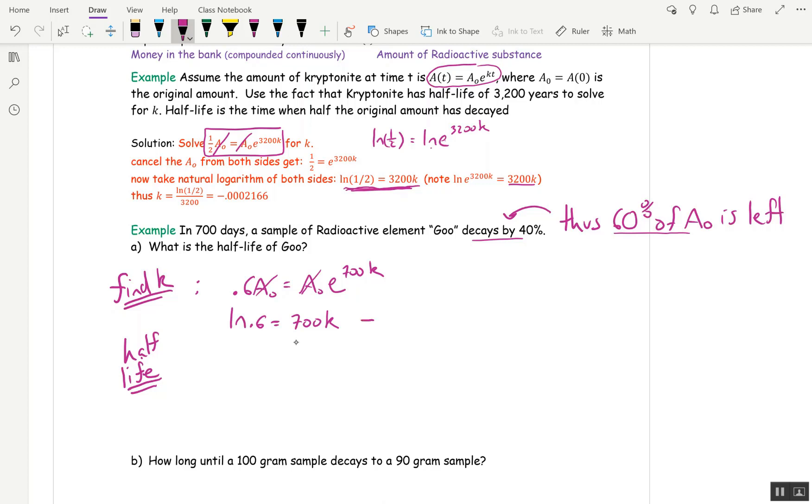Finally, divide both sides by 700. k is ln of 0.6 over 700. Now, I strongly suggest you leave it like that before you find the half-life. Then you won't get rounding error. So for the half-life, the half-life is always solved by using this equation up here.